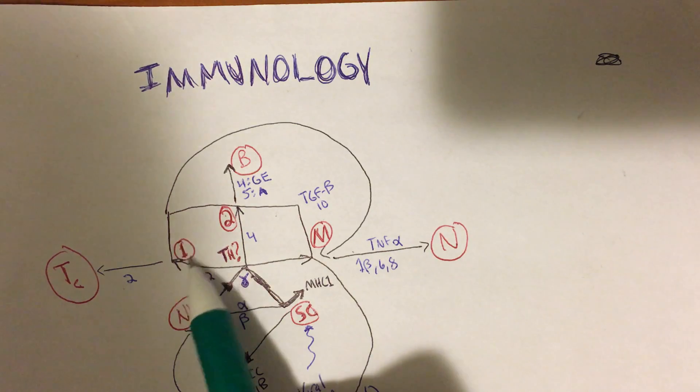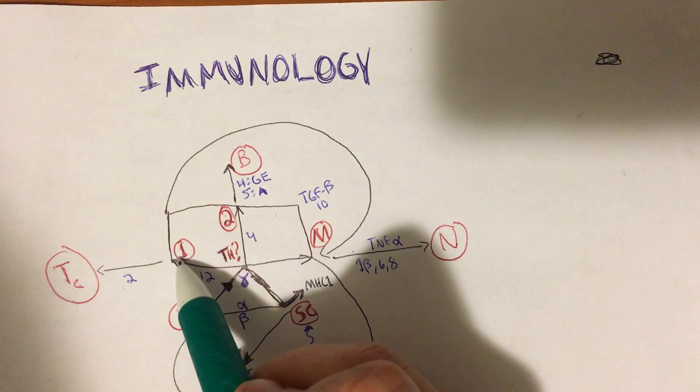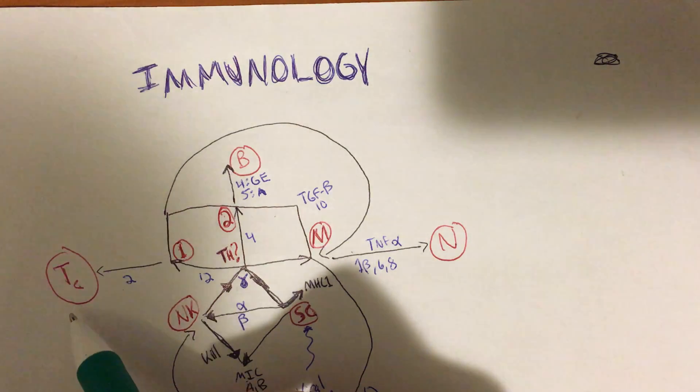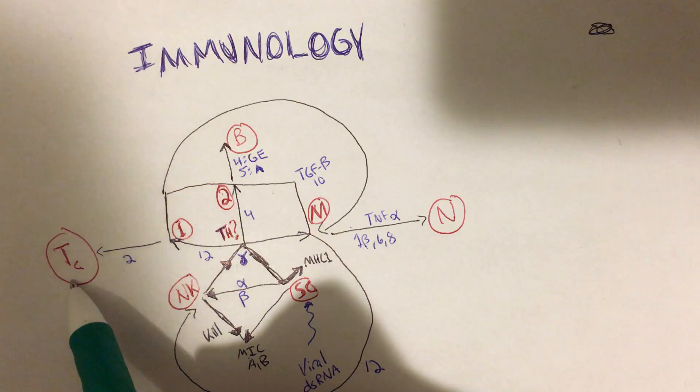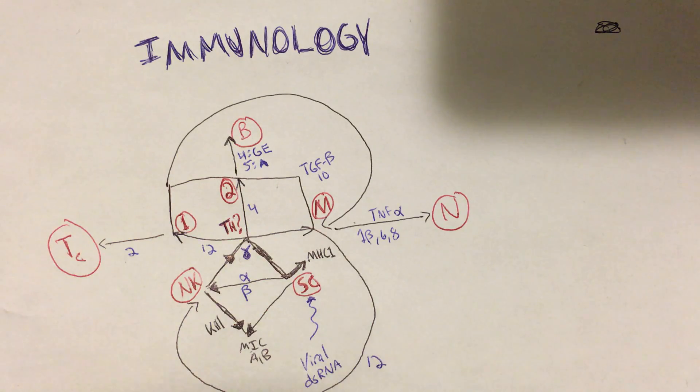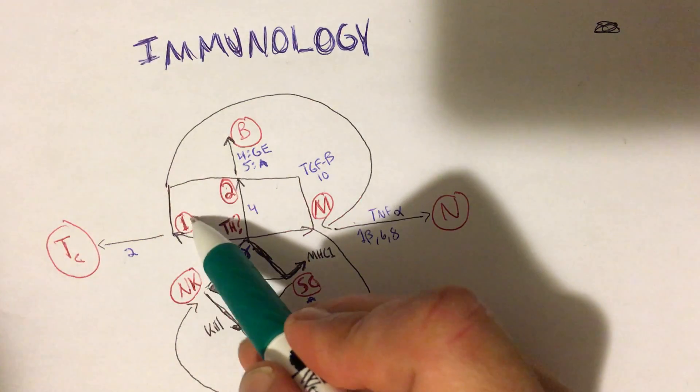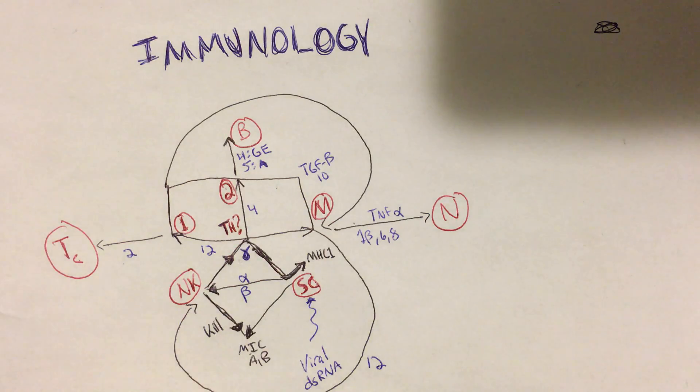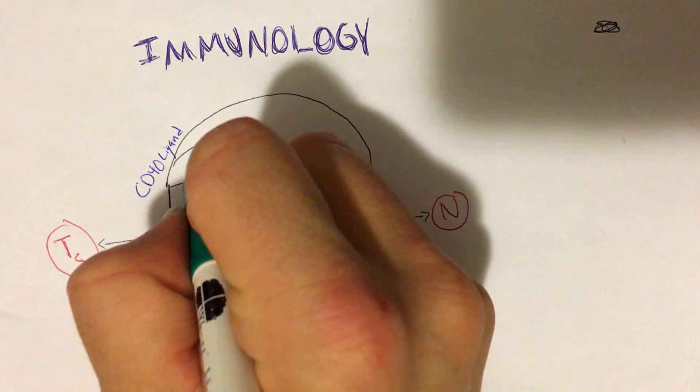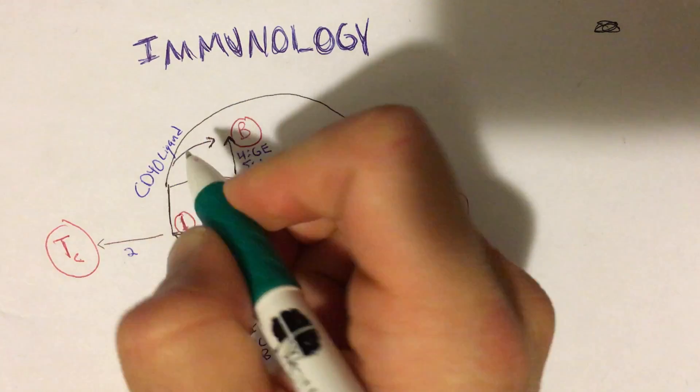And you can read all about those - this is just a map to help you get there quickly. And then if the TH cell differentiates to a helper T cell subtype 1, it will offload IL-2 to help with TC - that's cytotoxic T cell, CD8 T cell differentiation right here.